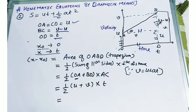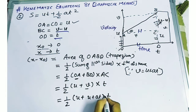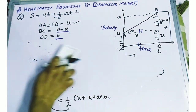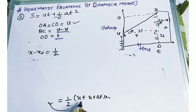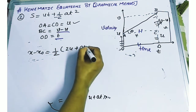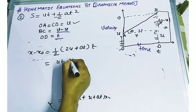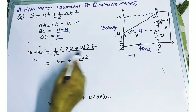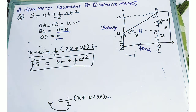From the first equation of motion we know that v equals u plus at. So in place of v I am going to substitute u plus at. So S equals half of (u plus u plus at) into t, which gives half of (2u plus at) into t. Multiplying this out, we get S equals ut plus half of at squared. X minus x naught shows the displacement. This is the second equation of motion, and hence it is proved.